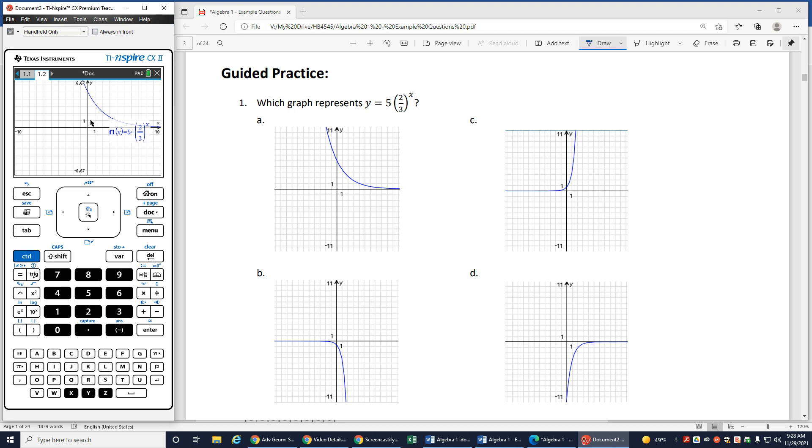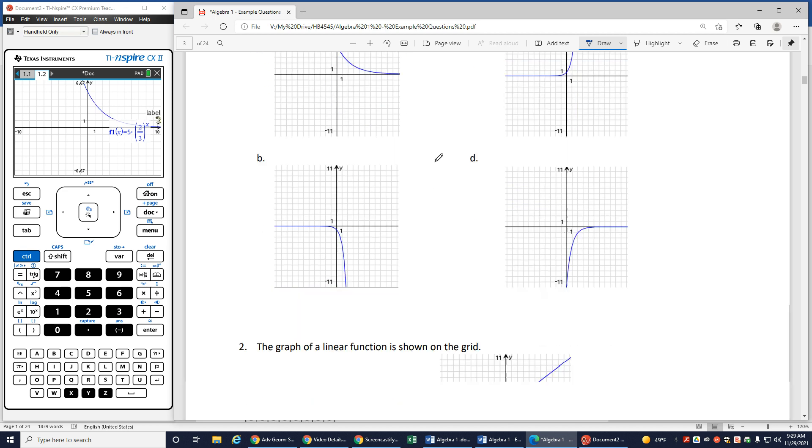Alright. So if I look 1, 2, 3, 4, 5, I can see it's crossing at 5 on the y axis. And then it's going down and to the right. Well the only one that's going down and to the right here is going to be this one. And we can just check to make sure 1, 2, 3, 4, 5, it is crossing right here at the 5. So A is going to be my correct answer there.